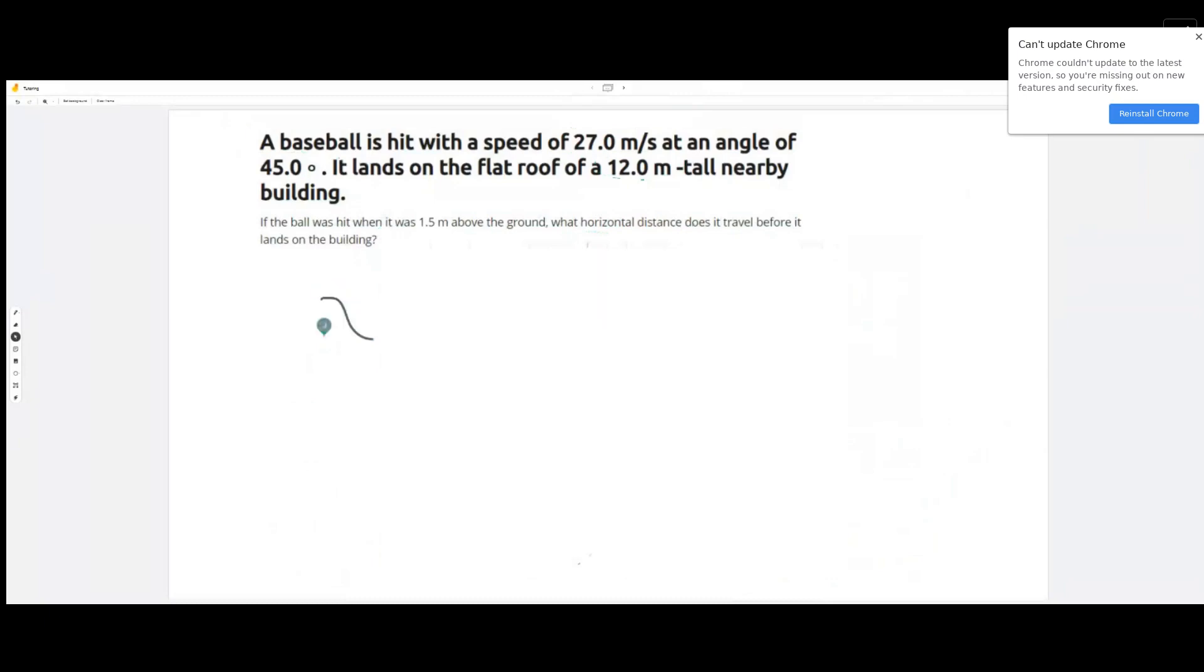We know that the x value, the horizontal position of the baseball at that specific time when the ball landed on the roof, is simply going to be 27 cosine 45—remember, this entire quantity is the initial x velocity of the ball—